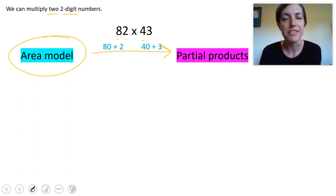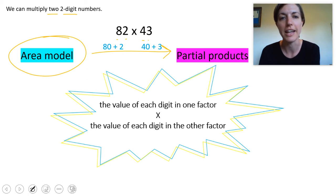When we're doing this we have to keep in mind the expanded form of these numbers because when you multiply multi-digit numbers you are essentially multiplying the value of each digit in one factor times the value of each digit in the other factor. Let me say that one more time. The value of each digit in one factor times the value of each digit in the other factor.